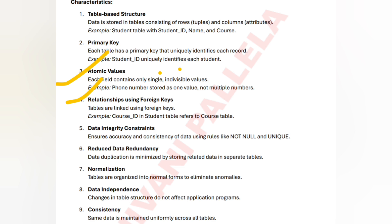Next is relationships using foreign keys. The primary key is the unique key you have, and the remaining linking keys are called foreign keys — tables are linked using foreign keys. Next is data integrity constraints, which ensure the consistency and accuracy of data. Next, it will reduce data redundancy — data redundancy is the duplication of data, and relational design reduces it.